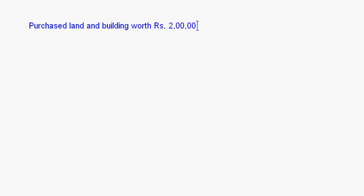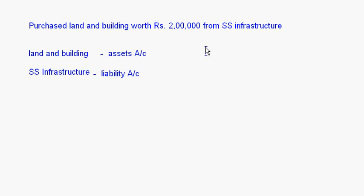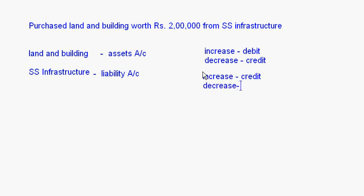Taking the same transaction with the modern approach — purchased land and building worth rupees 2 lakh from SS Infrastructure. The accounts involved are land and building, and SS Infrastructure. Land and building is an asset account, and SS Infrastructure is a liability account — we have to pay this person. For asset account: increase is a debit, decrease is a credit. For liabilities: increase is a credit, decrease is a debit.